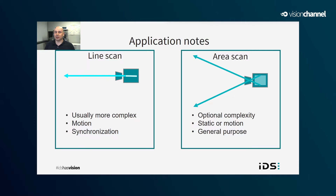Area scan imaging setups can certainly have their complexity, but these cameras also work quite well in a general point-and-shoot manner. Line scan imaging requires a bit more complexity because the motion needs to be synchronized with the capture of each line. You can do that synchronization by matching the frequency of the line rate with the application speed; however, sometimes variations in application speed require synchronization using an encoder or other hardware. Properly setting focus and alignment can also be more complicated because it requires the full system to be up and running, including motion and synchronization. So let's see how we can leverage the advantages of both by using an IDS area scan camera that provides a special line scan feature.